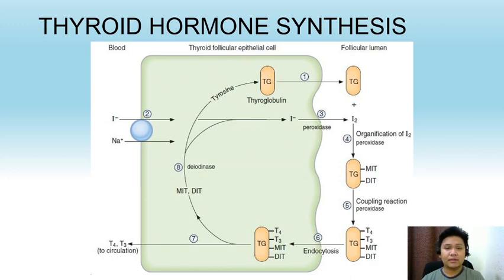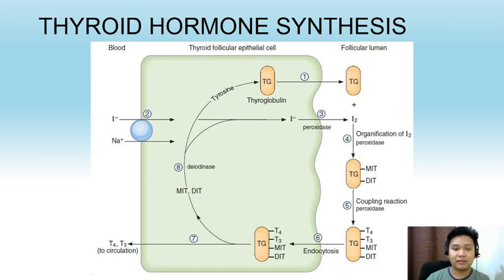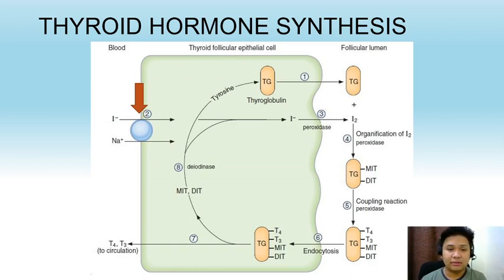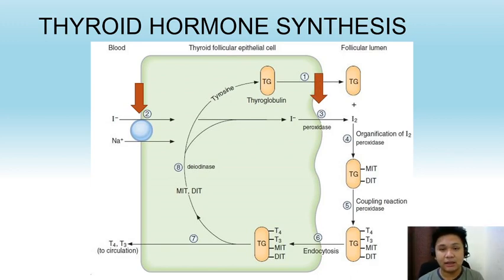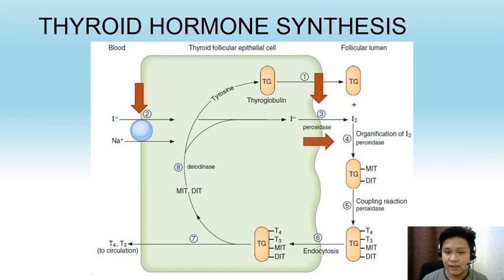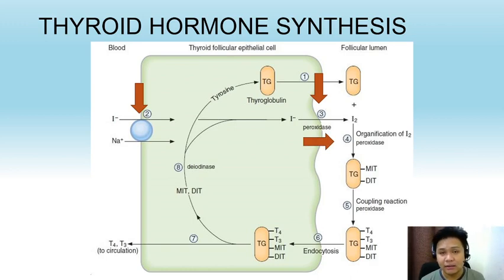This is an overview of thyroid hormone synthesis, which happens in the follicular cells of the thyroid gland. The follicular cells absorb iodine from the blood, and this iodine, through the enzyme thyroid peroxidase, is converted from its iodide form to its elemental iodine form. This iodine, again through thyroid peroxidase, undergoes organification, wherein iodine is combined with tyrosine to form MIT or DIT. MIT means monoiodotyrosine, DIT means diiodotyrosine.